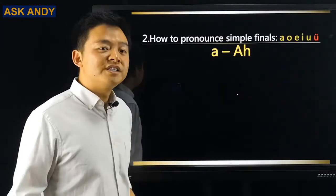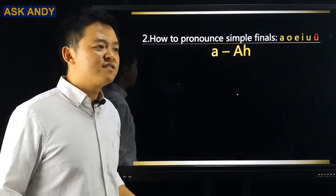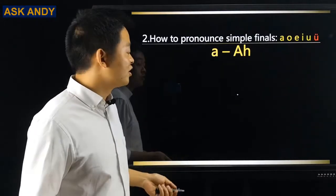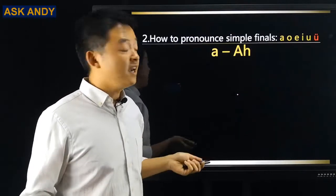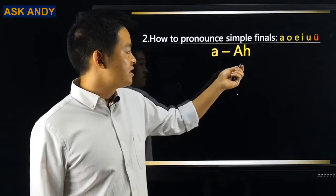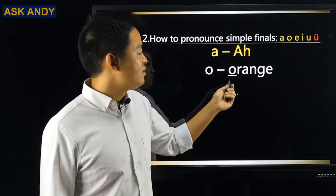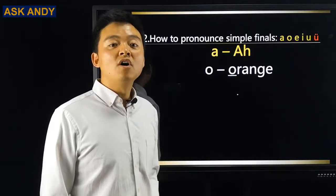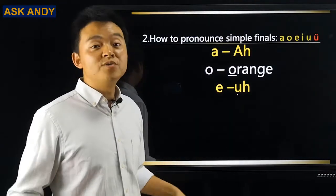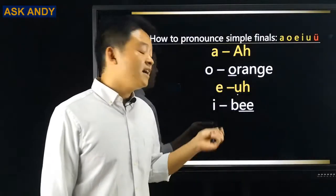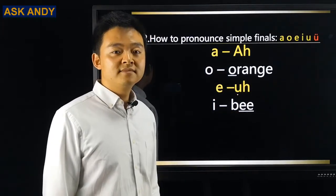Question number two: how to pronounce simple finals. Let's do them one by one. You don't really need to read after me many times — I'm going to give you counterparts in English so you'll find it easy. Letter A in Chinese — we don't read it as 'ay,' we read it as 'ah.' Letter O — first you do 'orange,' remember just this part: O. Letter E — we do 'ah,' it's really relaxing like you're sighing. Letter I — first you say 'bee,' so this one is 'ee.'